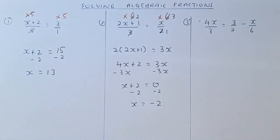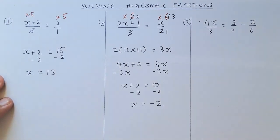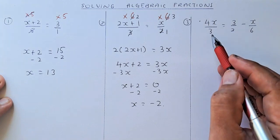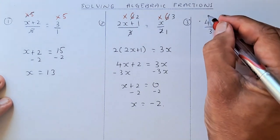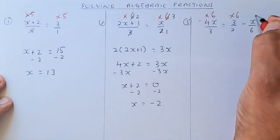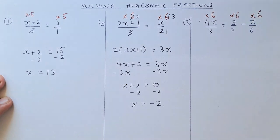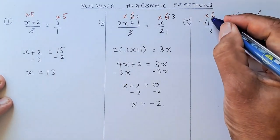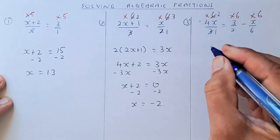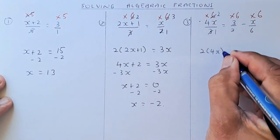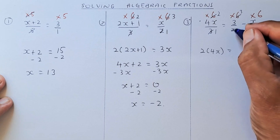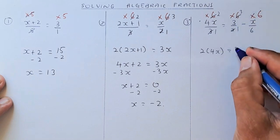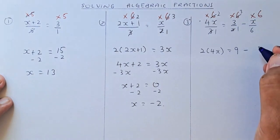The third example is 4x divided by 3 equals to 3 over 2 minus x minus 6. The lowest common denominator of 3, 2, and 6 is going to be 6. So you multiply by 6 in every term. When you multiply by 6 in the first term, 6 divided by 3 is 2, so it becomes 2 bracket 4x. On the other side, 6 divided by 2 cancels to give 3, so 3 times 3 is 9. And 6 over 6 just cancels out, giving minus x.